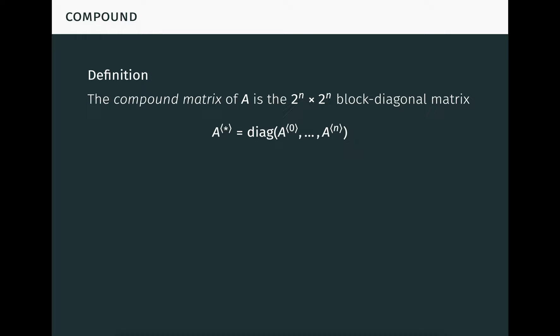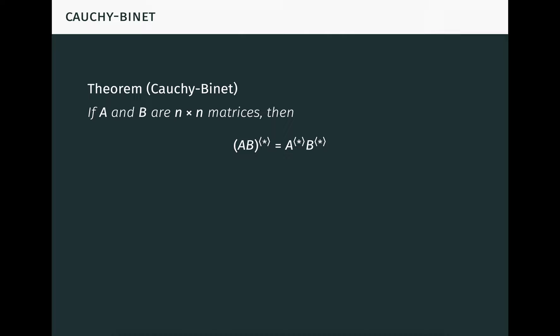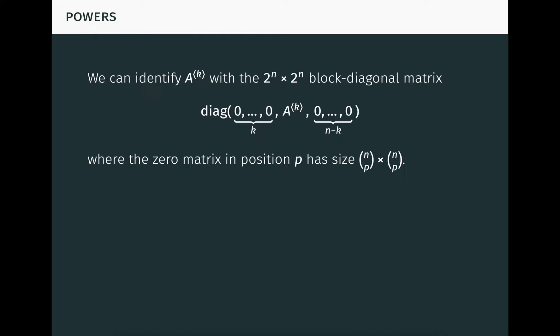The compound matrix of A is the 2 to the n by 2 to the n block diagonal matrix A star, with the compound powers of A down the main diagonal. It's convenient to count the positions of the blocks on the diagonal starting at 0 instead of 1, so that A to the k is in position k. Here's what the compound of a 2 by 2 matrix looks like, for example. We can already put this definition to good use in a general statement of the Cauchy-Binet theorem, which shows that the star operation plays well with matrix multiplication. By contrast, it doesn't play well with matrix addition or scalar multiplication, because it's not a linear operation.